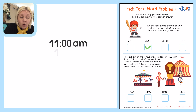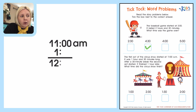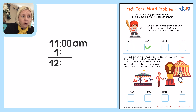It was 1 hour and 30 minutes long. So if we add 1 hour to 11 o'clock, it would be 12 o'clock. We add this up — 12 o'clock. Then it was 1 hour and 30 minutes long, so we add 30 minutes over here, and we've got 12:30.